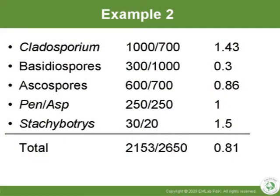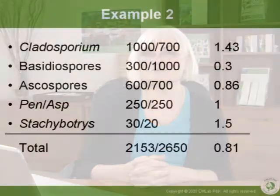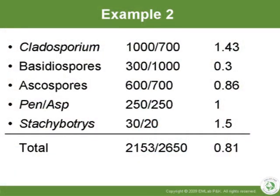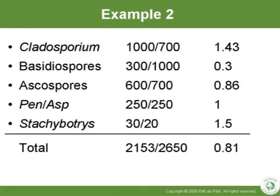In this example, Cladosporium, Penicillium, and Stachybotrys all have ratios greater than one, which would indicate a problem — but the total ratio is less than one, which would not indicate a problem. This emphasizes again the fact that you must use individual taxon ratios. In this case, Cladosporium levels aren't really that different: 1,000 to 700 is not a strong difference. The populations tend to vary geometrically, so you would really like to see 10,000 versus 700, not 1,000 versus 700. So in actuality, 1,000 and 700 are not statistically different with respect to fungal aerosols.